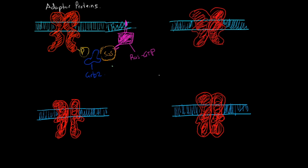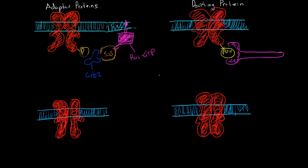The second type is a docking protein. This one will have the PTB domain. This little molecule will have a phosphate on it that interacts with the PTB domain. The molecule I've drawn here is called IRS. Docking proteins have their own tyrosine residues that can be phosphorylated, so they stay attached to the RTK and can turn on other proteins.